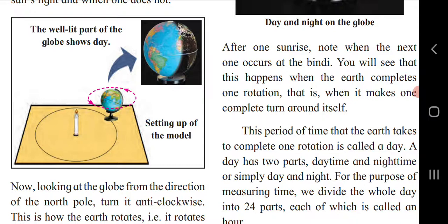Day and night occur at the same time in different parts of the world. For example, if it is 5 PM in one place, in some other countries it may be morning or nighttime.